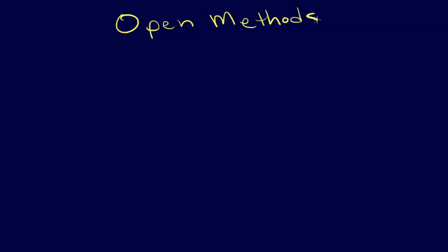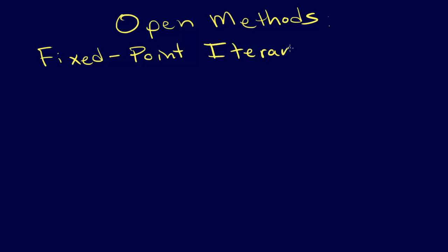Now we're ready to talk about some of the open methods. The one we're going to talk about first is called fixed point iteration. A lot of the explanations I've seen haven't explained this graphically, and I think that's unfortunate because we lose sight of what's going on. It can certainly be understood algebraically, but graphically it's extremely useful and gives us a better idea of what's going on.